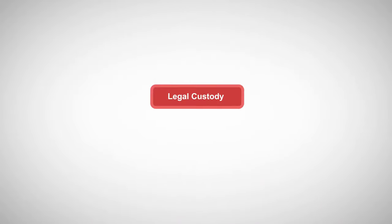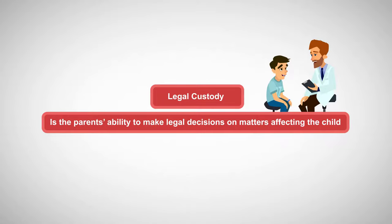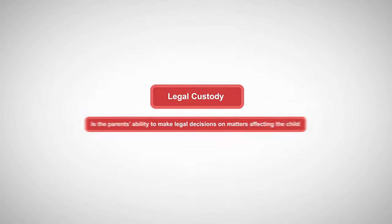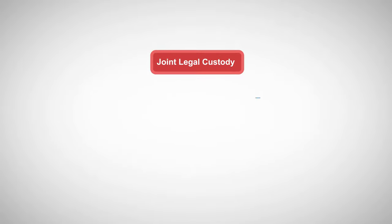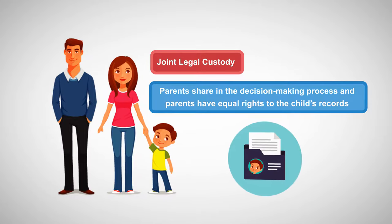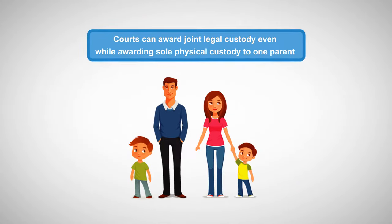Legal custody is the parent's ability to make legal decisions on matters affecting the child. Examples of these legal decisions include determination on a child's medical care, education, and religious upbringing. Unless circumstances demonstrate that one parent should not be involved in legal decision-making, courts typically award joint legal custody. Under joint legal custody, parents share in the decision-making process and have equal rights to the child's records. The benefit of such an arrangement is that both parents remain involved in making decisions that will impact their children's lives. If a dispute arises over a legal decision, a court can settle the dispute. Courts can, and often do, award joint legal custody even while awarding sole physical custody to one parent.